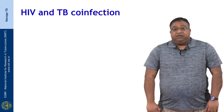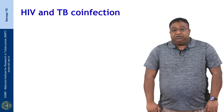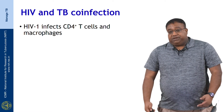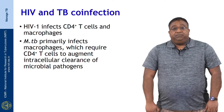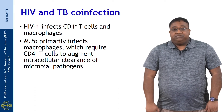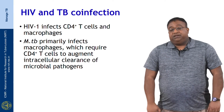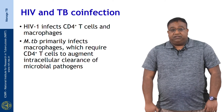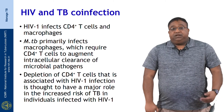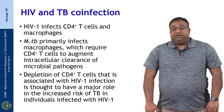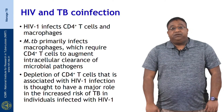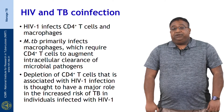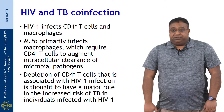Coming to HIV and TB co-infection: HIV-1 infects CD4 T cells as well as macrophages, while MTB primarily infects macrophages, which require CD4-positive T cells to augment the clearance of microbial pathogens. Therefore, the depletion of CD4-positive T cells associated with HIV infection is thought to have a major role in the increased risk of TB in individuals with HIV.